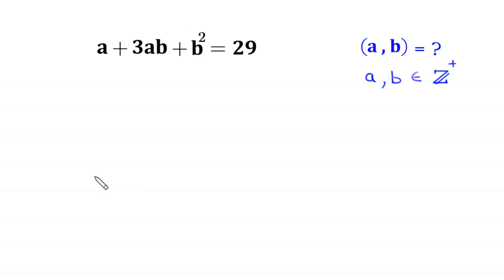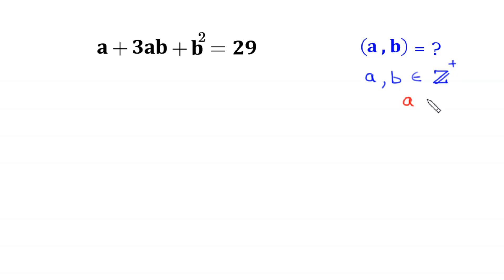Hello everyone, you are welcome. We need to solve this Diophantine equation: a² + 3ab + b² = 29. We need to find all possible values of a and b where a and b are positive integers, meaning a must be greater than 0 and b must be greater than 0.